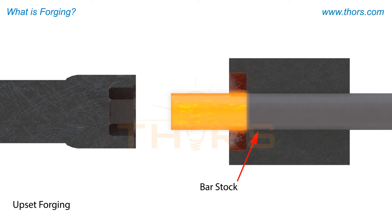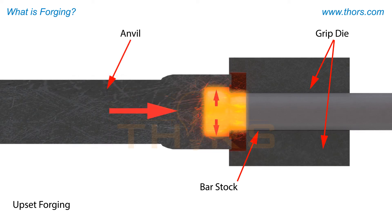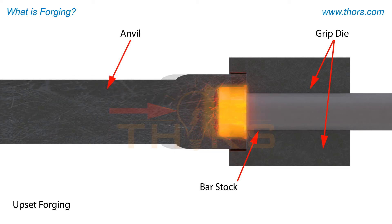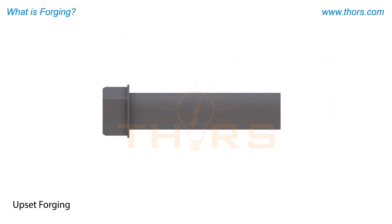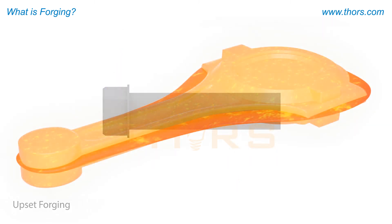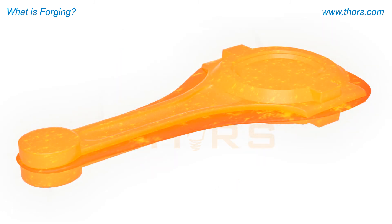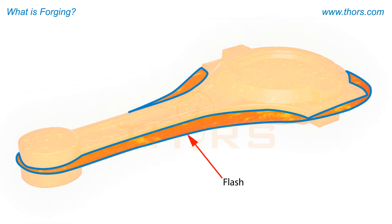The process of upset forging is accomplished by heating one end of the bar to a required temperature, gripping the non-heated side of the bar as an anvil strikes or upsets the heated side.